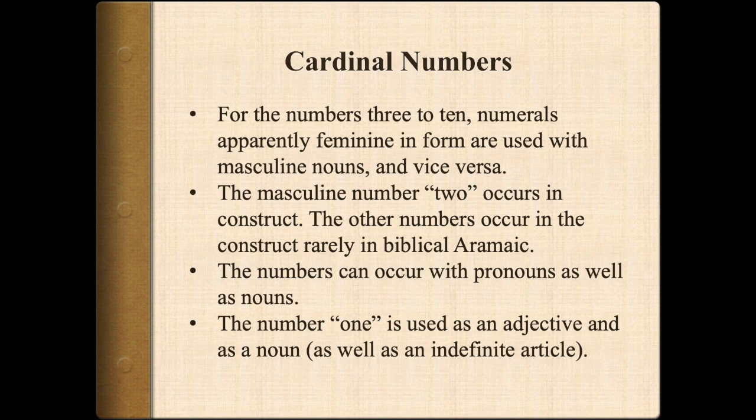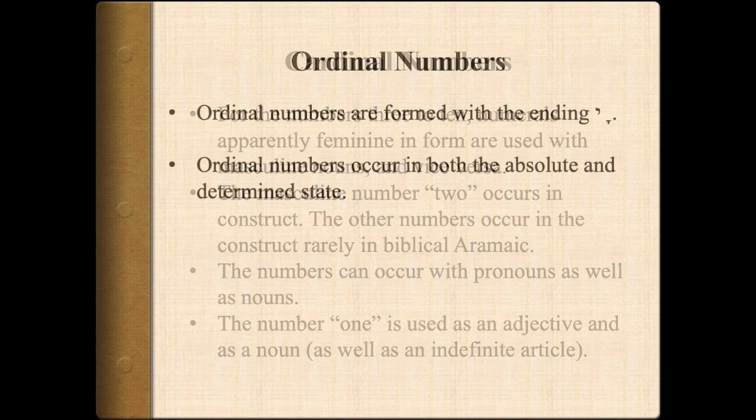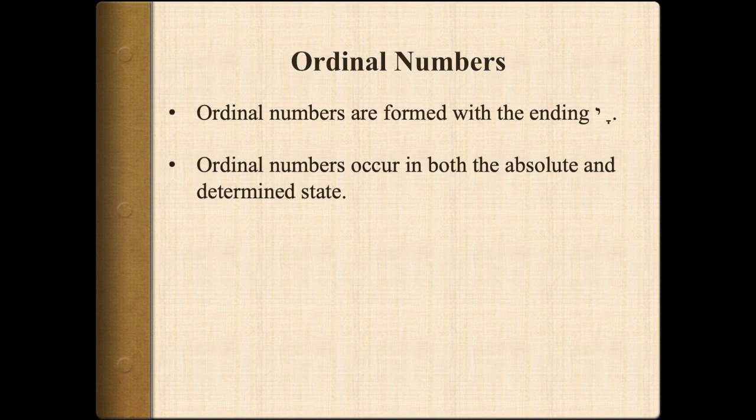The number 1 is used as an adjective and as a noun, and can sometimes appear as an indefinite article. The ordinal numbers are formed with the ending Komets-yod, and they can occur in both the absolute and determined state.